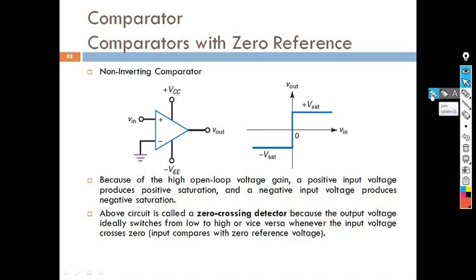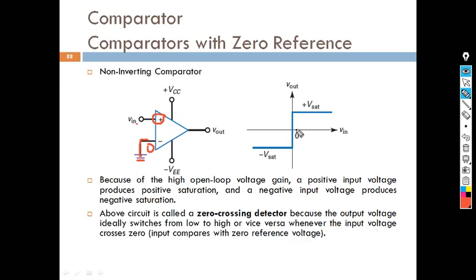In the diagram you can see the operational amplifier where the non-inverting terminal is connected to the input and the inverting terminal is normally connected to ground. That means the inverting terminal is at zero. This zero detector will detect whenever the input crosses zero — whether it crosses from zero to the positive side or from zero to the negative side. When it crosses to the positive side, the output will be positive Vsat. When the input crosses to the negative side, the output will be negative Vsat.